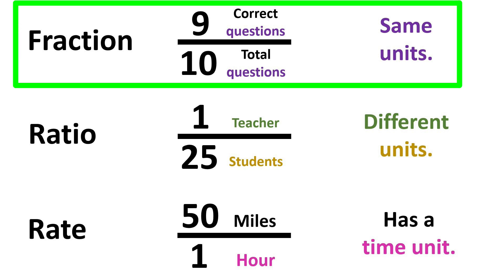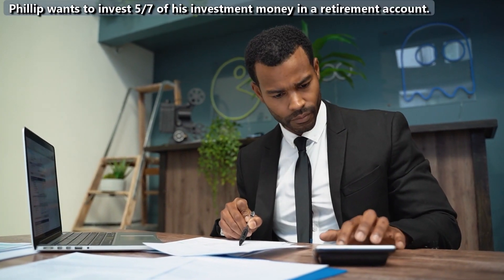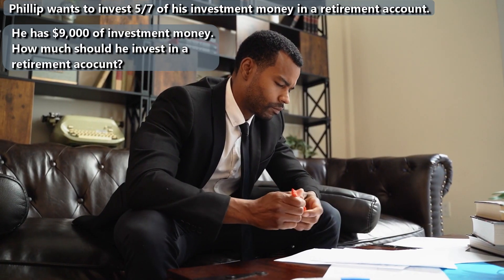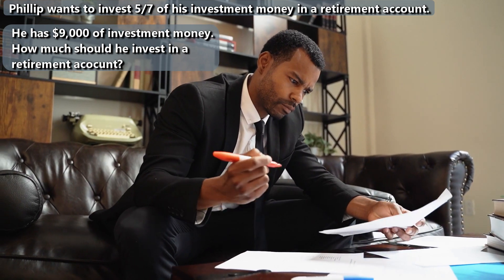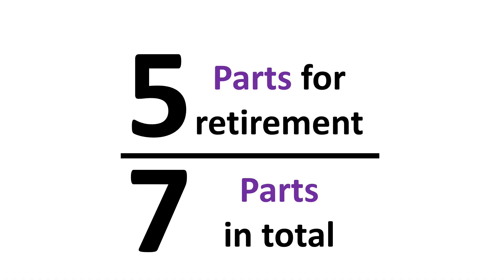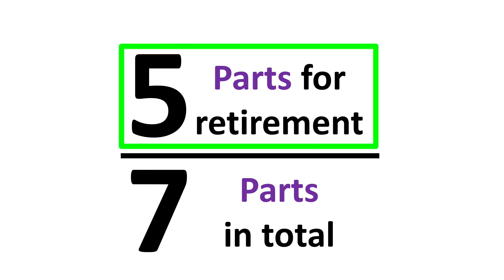We'll begin with a fraction problem. Philip wants to invest five-sevenths of his investment money in a retirement account. He has $9,000 of investment money. How much should he invest in his retirement account? This is a fraction problem because the units above and below the division bar are the same — in this case, the units are the parts of his investment money.